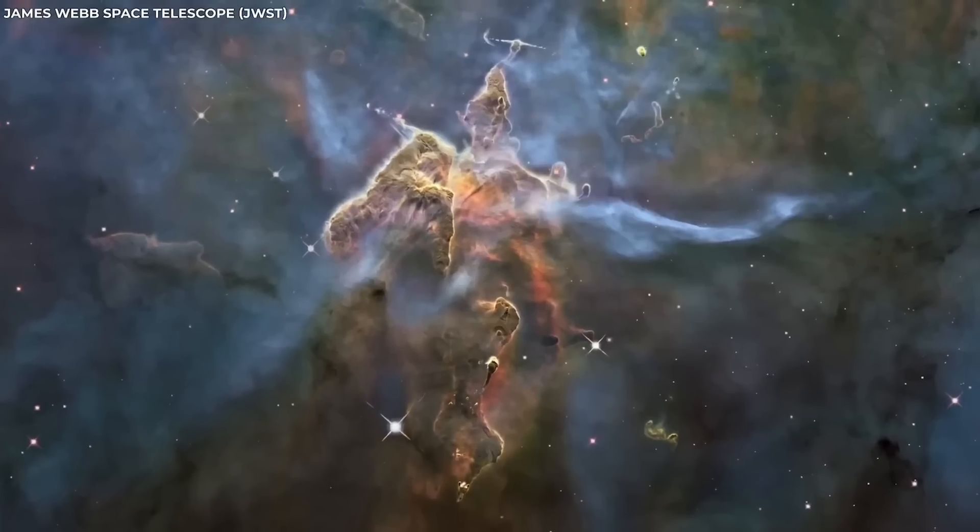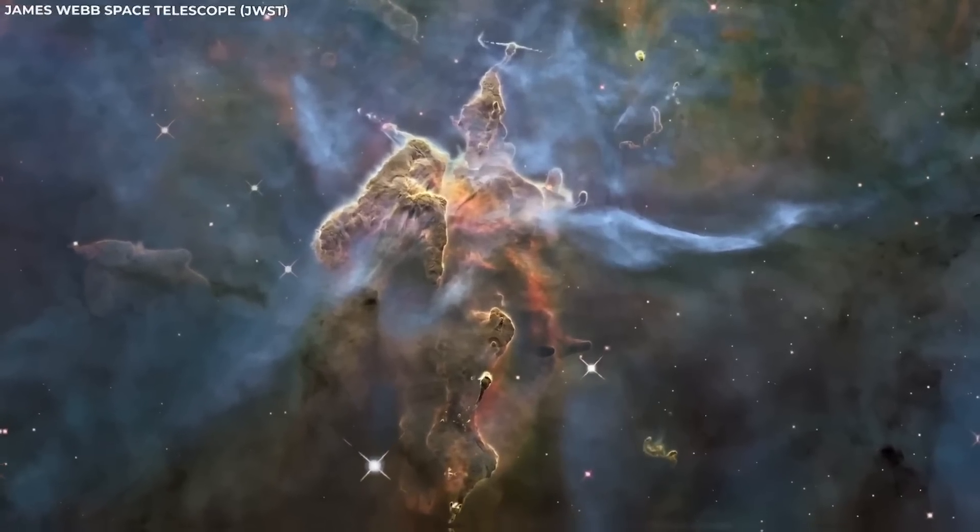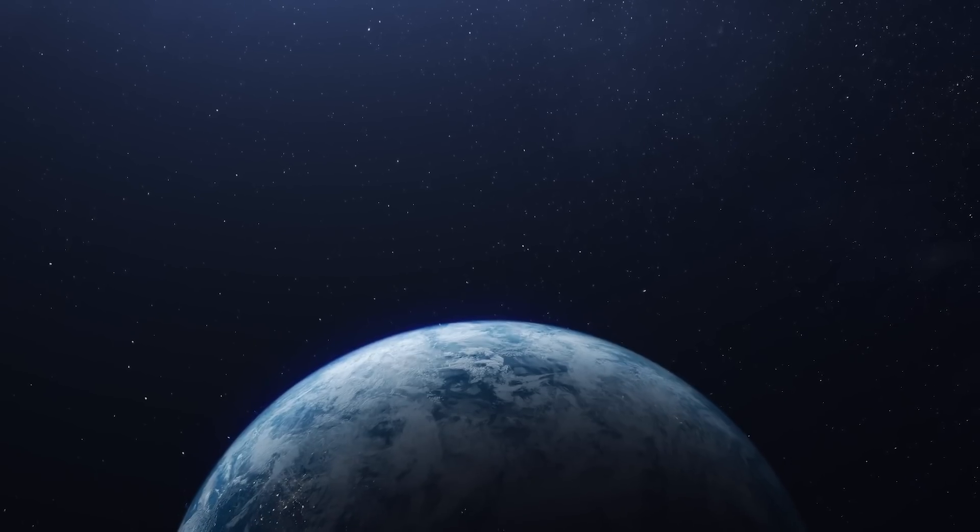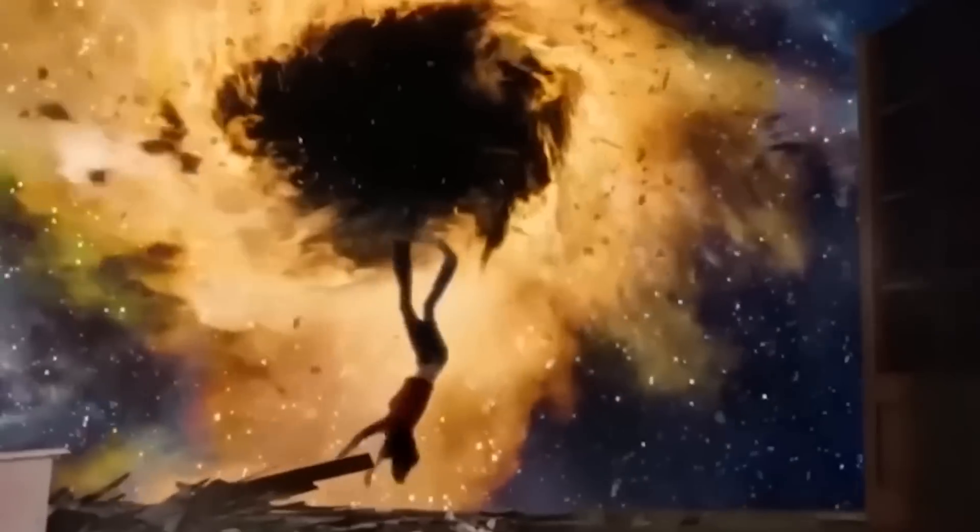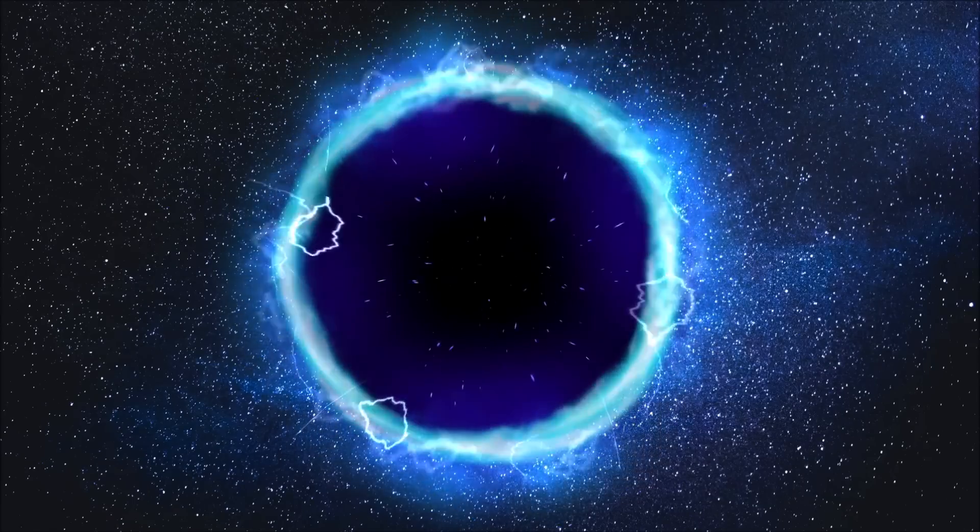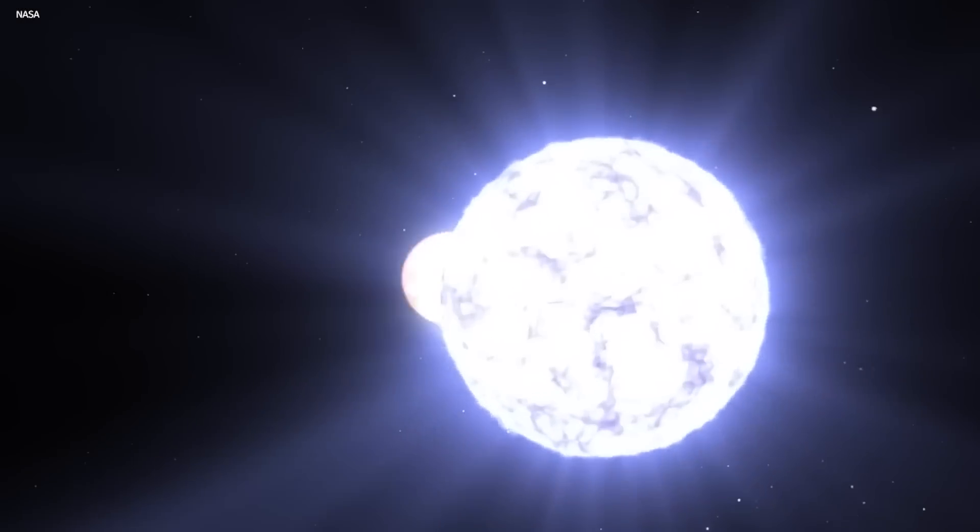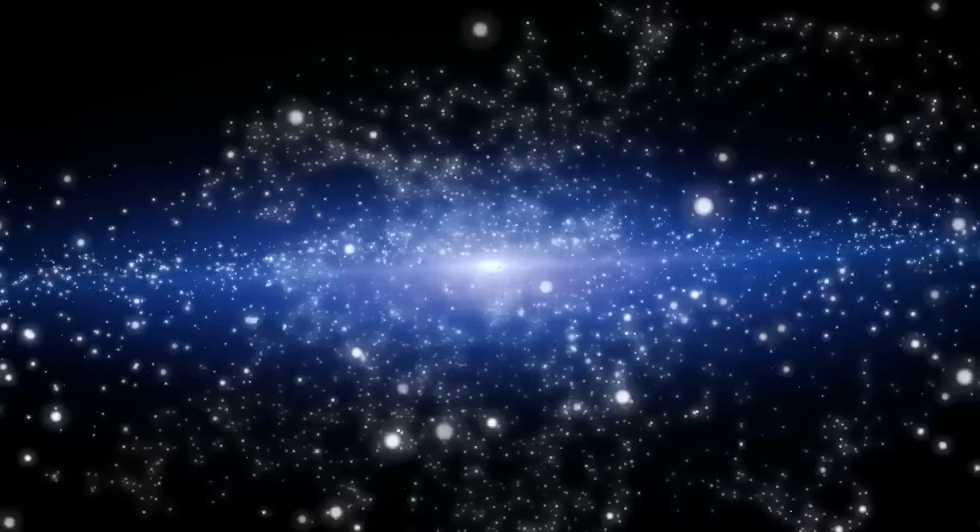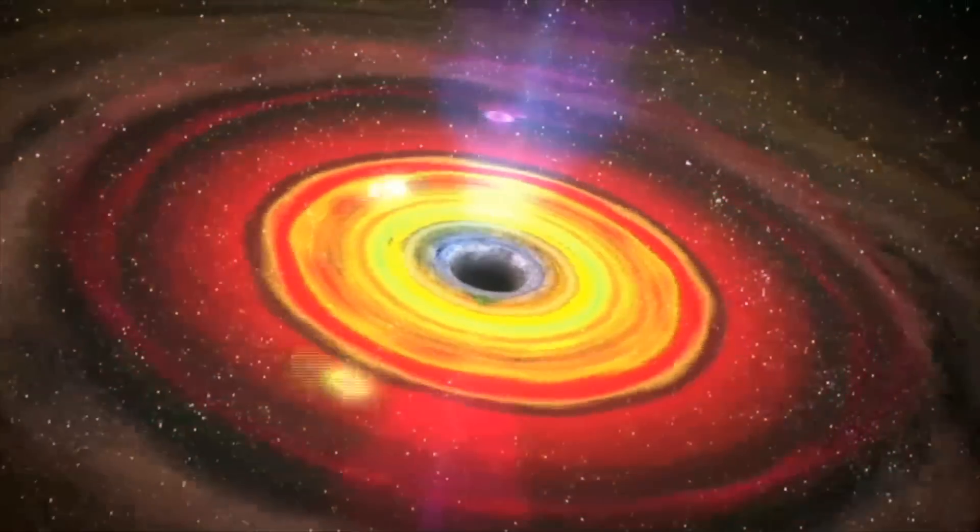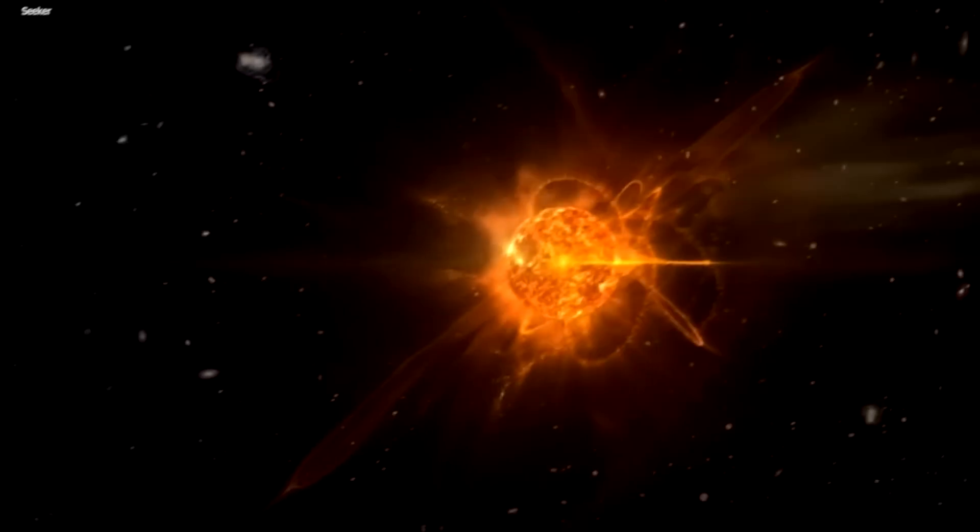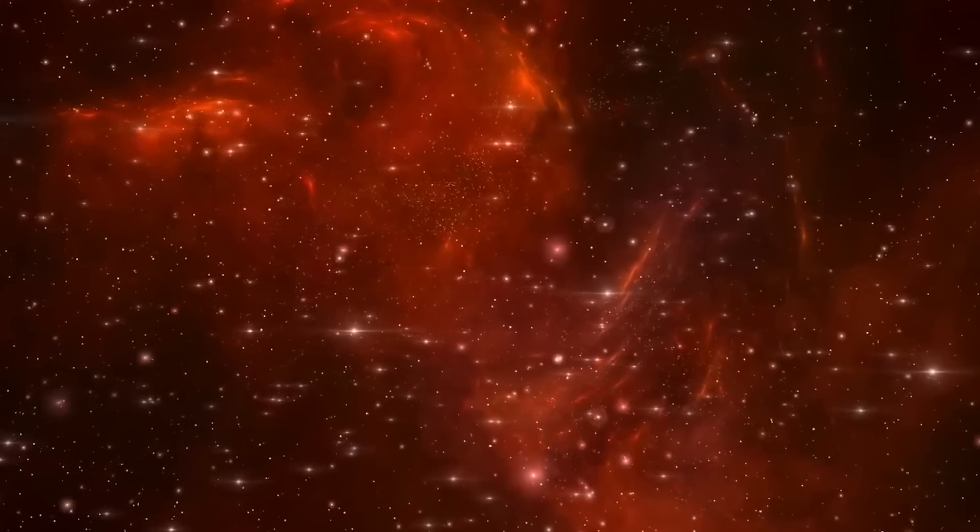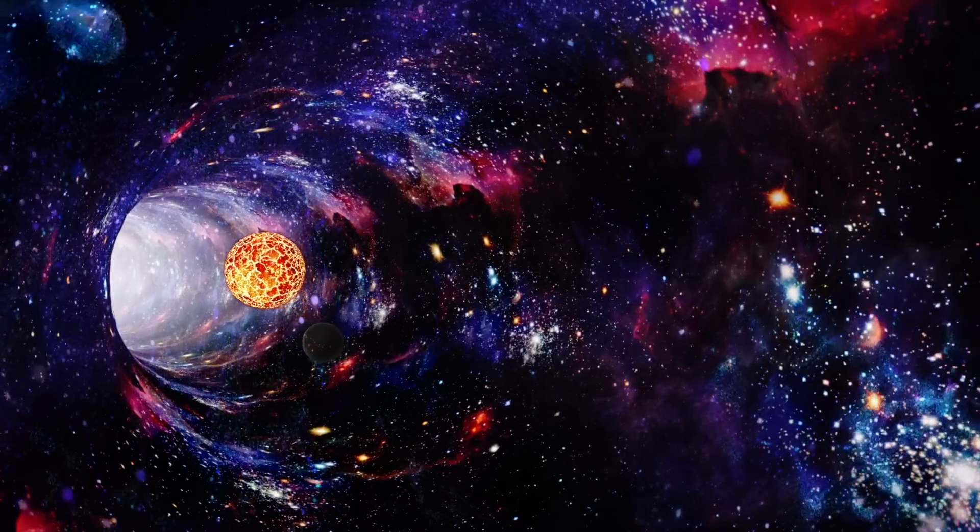These extraordinary galaxies contain tens to hundreds of billions of stars and emerged when the universe was only 500 to 700 million years old. This contradicts the gradual clumping of matter predicted by current models of galaxy formation. The puzzle of how these galaxies grew so large so quickly challenges our understanding of physics and the mechanisms behind galaxy formation. It suggests the need for new physics or alternative techniques to explain the rapid emergence of these massive galaxies.